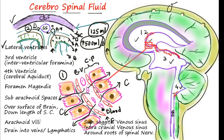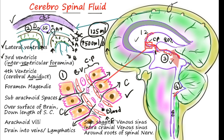CSF is produced from the choroid plexus, indicated here in red. From the lateral ventricle, the CSF moves to the third ventricle via the interventricular foramina. Remember that 80% of CSF is produced from the lateral ventricle. Thereafter, the CSF moves to the fourth ventricle via the cerebral aqueduct, also known as the aqueduct of Sylvius.